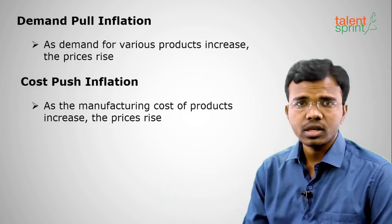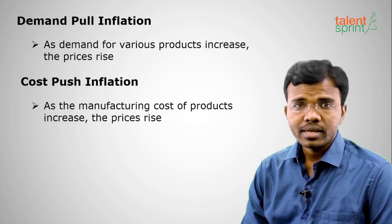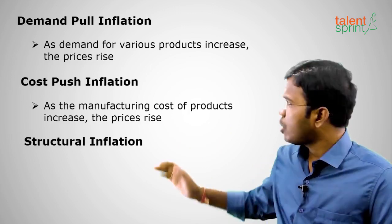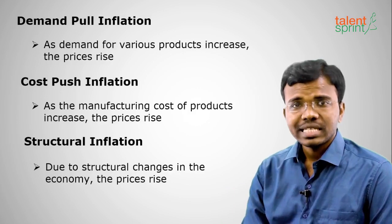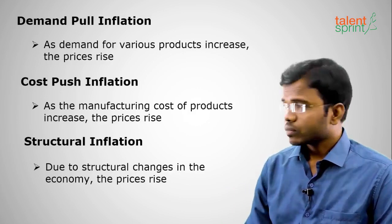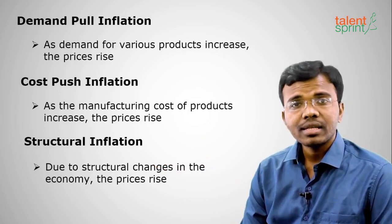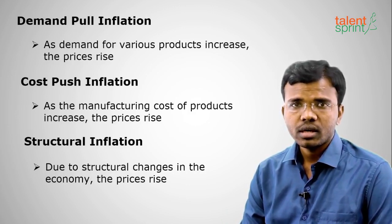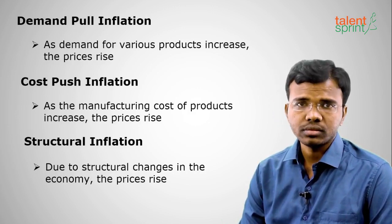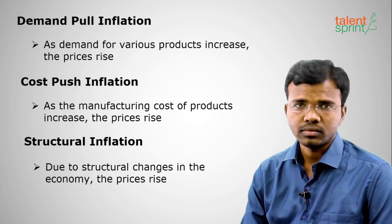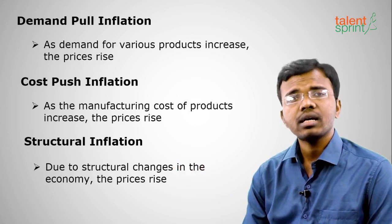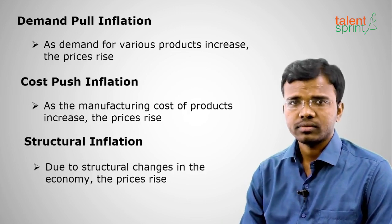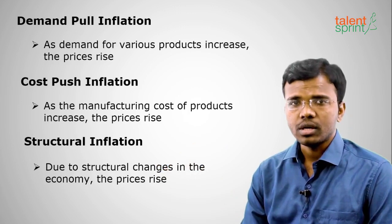The manufacturer doesn't absorb that cost himself, so it finally transfers to the consumer. In these ways the manufacturing cost increases, and as the manufacturing cost increases the prices also rise. The third type of inflation is structural inflation. As the name says, structural means due to structural changes in the economy the prices rise. For example, in the 1990s there was no demand for computers, but after the technological revolution the demand for computers rose. Earlier we used to have only landlines, now we have mobiles — the cost of smartphones has increased. These are structural changes.